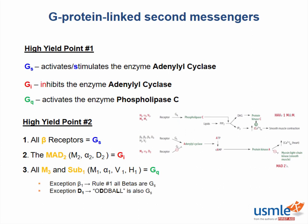Now, exceptions are beta1, which according to rule number one — all betas are Gs. And also D1, which I like to remember as my oddball for also being Gs. So you see how we simplified this chart. If you can remember the signal cascade of the three G proteins and which receptors they are coupled to, then you've mastered half the pharmacology battle.